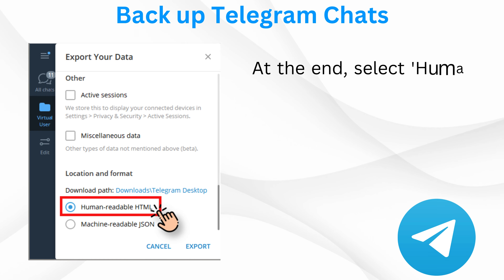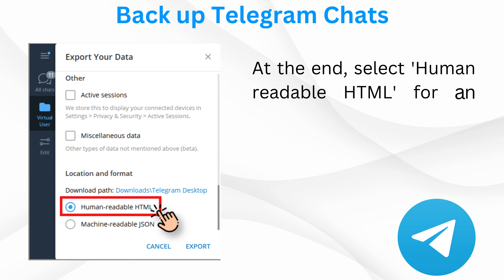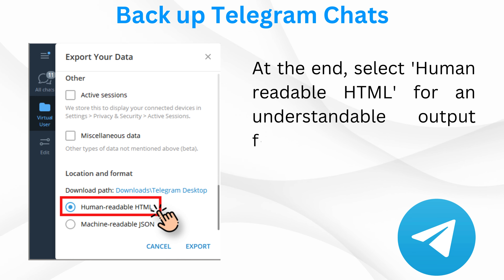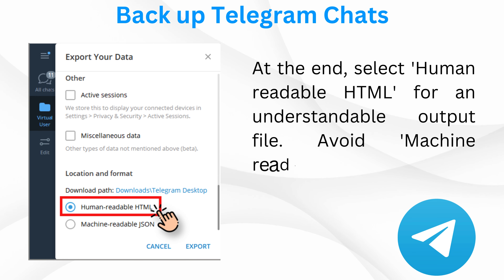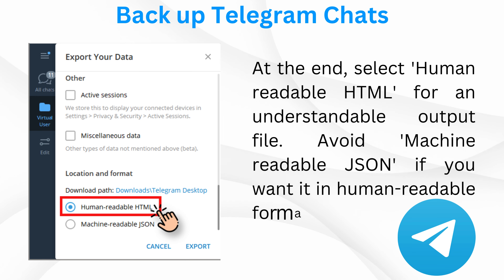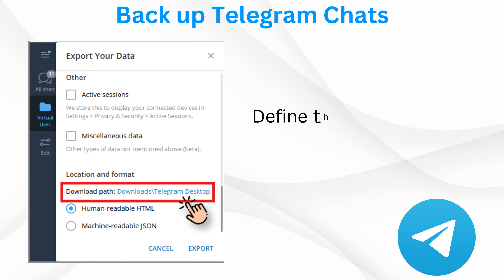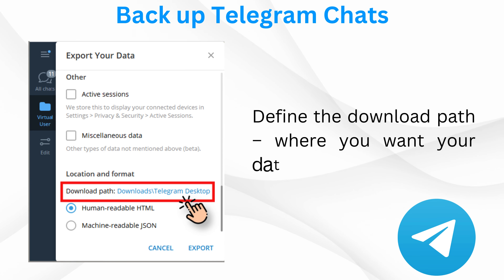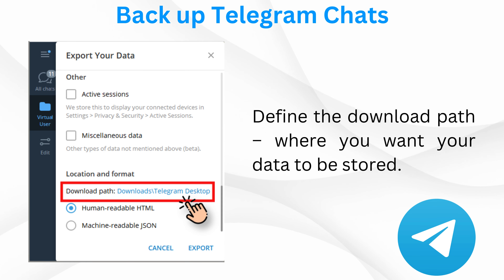Step 6. At the end, select human-readable HTML for an understandable output file. Avoid machine-readable JSON if you want it in human-readable format. Step 7. Define the download path where you want your data to be stored.